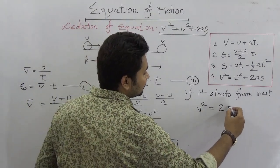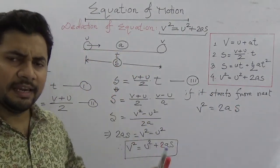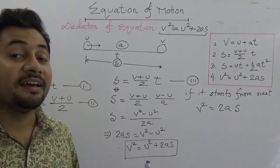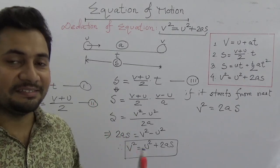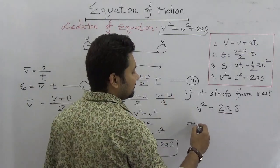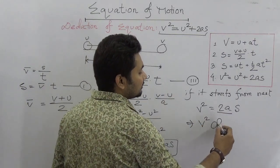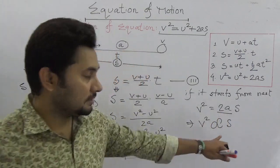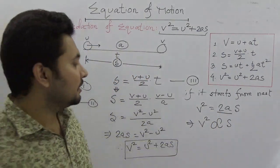Again, like before, if we say this is uniform acceleration, then a is constant. If it's constant, v² is proportional to s. If we take the square root, we will have v proportional to √s.